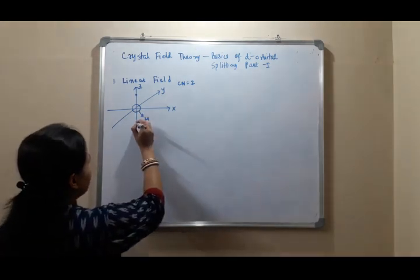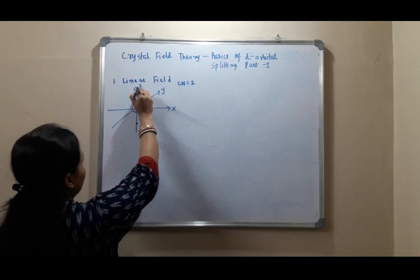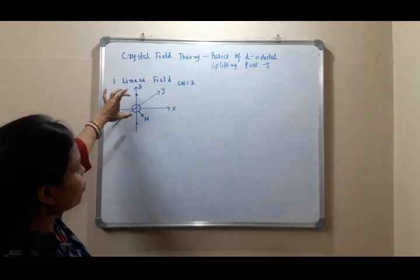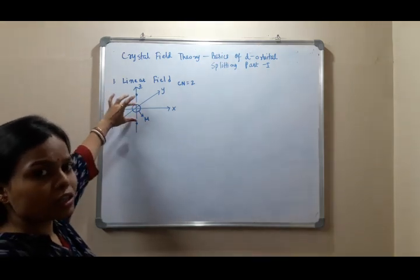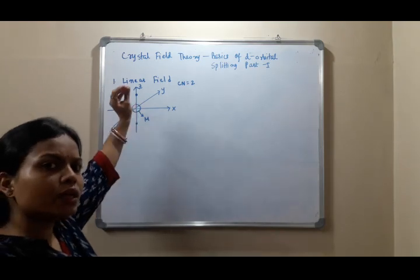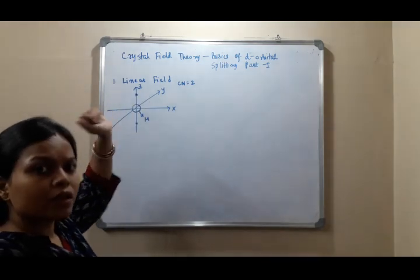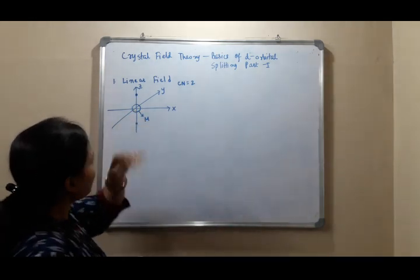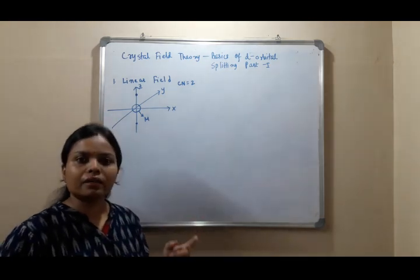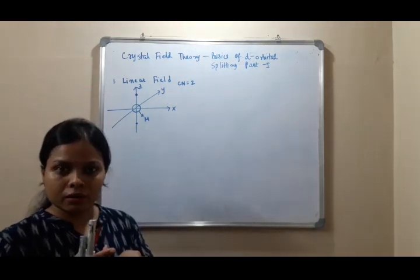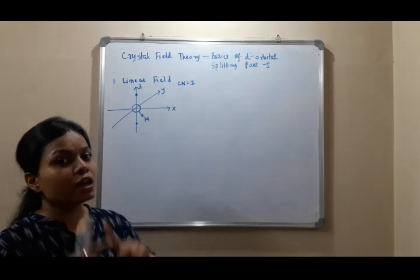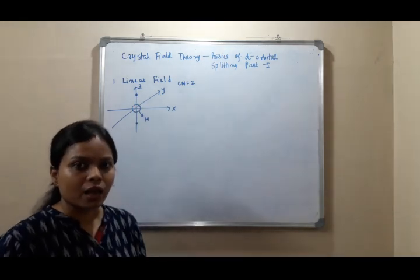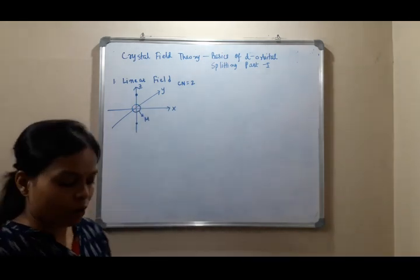If the ligand approaches the metal ion along the z-direction — that means along the plus-minus z direction — what will happen to the d orbitals of the metal ion? Let's have a short recap of the earlier video: those orbitals which contain the z-component will be repelled much more by the ligand negative charges compared to the other d orbitals which do not have the z-component.